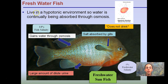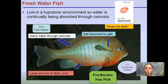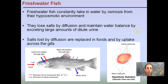Looking specifically at the freshwater fish — they live in a hypotonic environment. If they did not regulate water intake, these fish would essentially swell up to the point that their cells could lyse or burst. Water is constantly being gained through osmosis, some salt is absorbed by the gills, and they excrete a large amount of dilute urine. The cells have 14% concentration versus 0% in the water, so water is constantly trying to move in. Freshwater fish constantly take in water by osmosis, lose salts by diffusion, and balance it by excreting large amounts of dilute urine. Salts lost by diffusion are replaced through food and uptake across their gills.